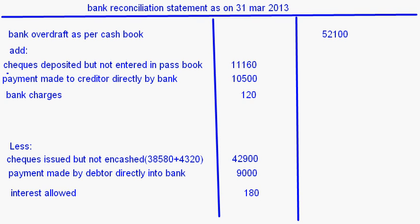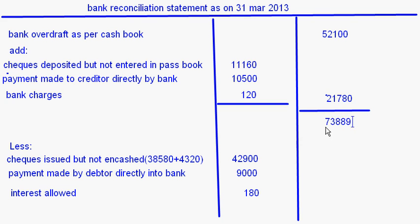All the items have been put into the bank reconciliation statement. Now let's see the total. First, the additions: 11,160 plus 10,500 plus 120 equals 21,780. So 21,780 is added to the overdraft.